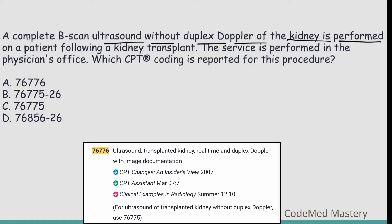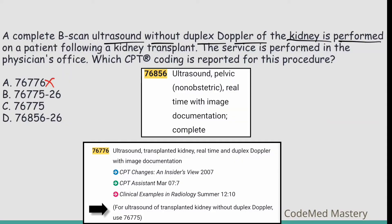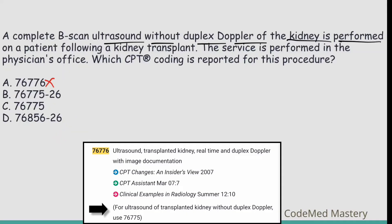Under code 76777, there is a parenthetical note: for ultrasound of transplanted kidney without duplex Doppler, use 76775. So the correct code is 76775. Modifier 26 in option B is not appropriate here because the service is performed in the physician's office — the same provider handles both technical and professional components, so modifier 26 should not be coded separately. Option C is the right answer.